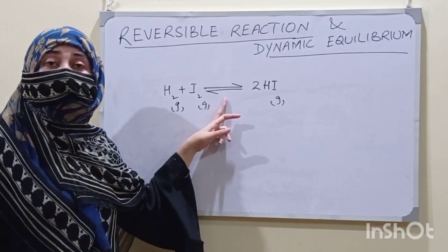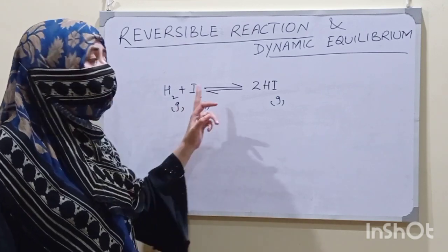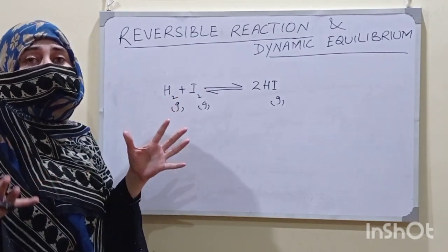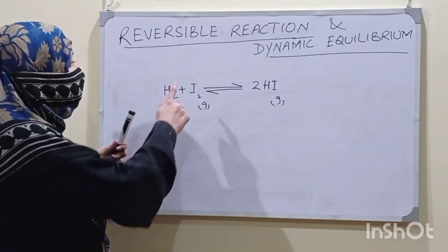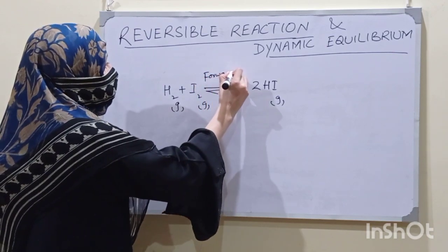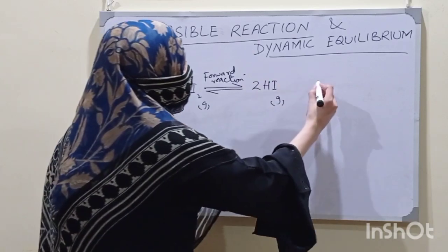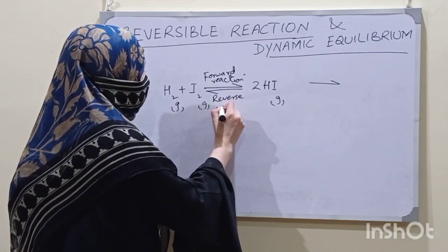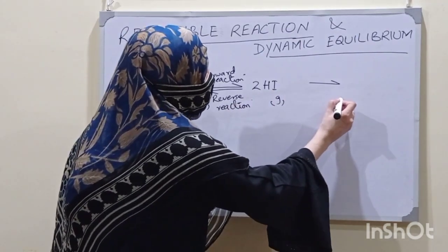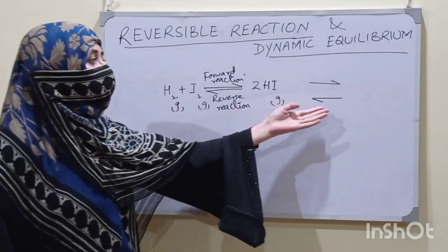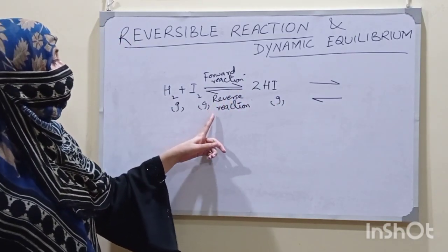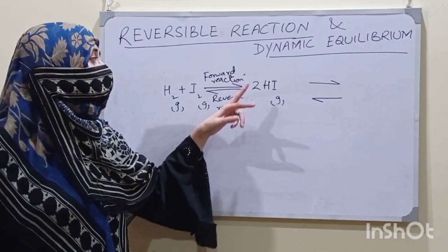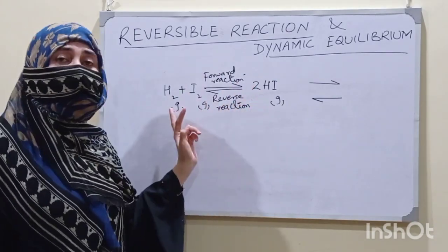This sign is basically showing that this is a reversible reaction. First the reactants were converted into products and in the beginning the reaction was fast. The forward reaction is always shown by a single-headed arrow, and the reverse reaction is always shown by a single-headed arrow in the opposite direction. So this is the reversible reaction, showing that first hydrogen gas and iodine vapors were converted into hydrogen iodide gas, and ultimately after some time the product is converted back into the reactants.